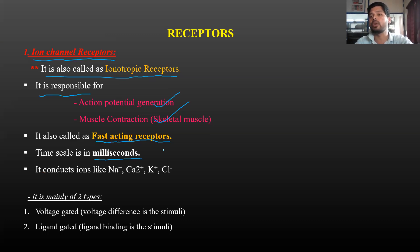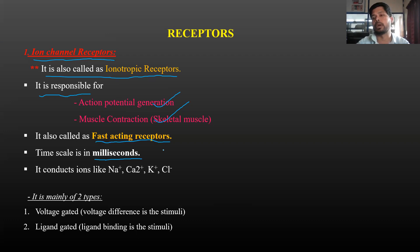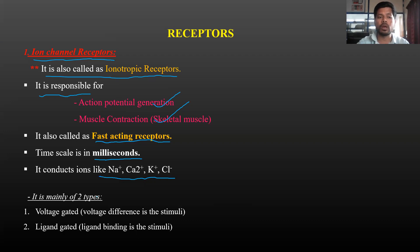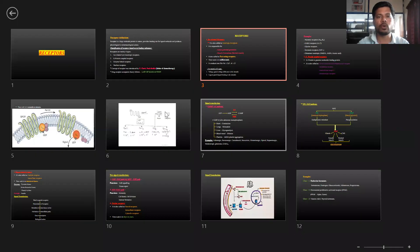Within a fraction of seconds, the ion channels act accurately and produce relaxation or contraction — this is a fast-acting receptor response, occurring in about 20 milliseconds. These ion channel receptors are ionotropic receptors and conduct ions like sodium, calcium, potassium, and chloride.